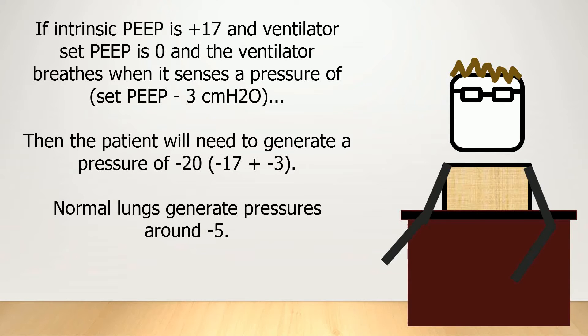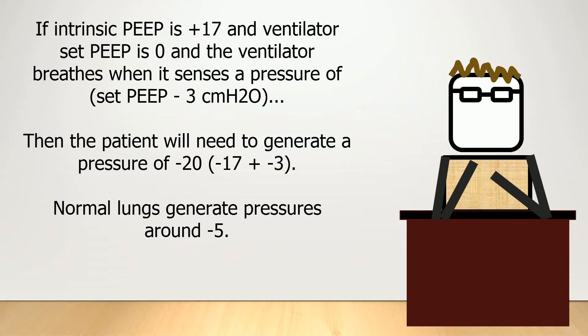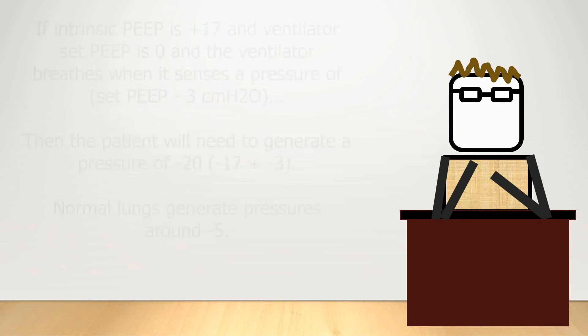For example, if the intrinsic PEEP is positive 17 cm of water and the ventilator is set to trigger when it senses a pressure of minus 3 below the PEEP, then the patient will need to generate 20 cm of water in order to reach that threshold if the PEEP is set to zero. This will cause the patient to attempt many undelivered breaths, causing extra work and anxiety for the awake patient.